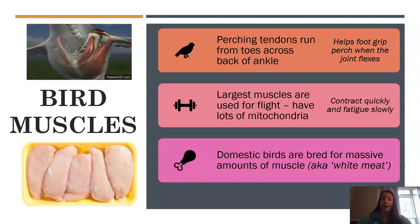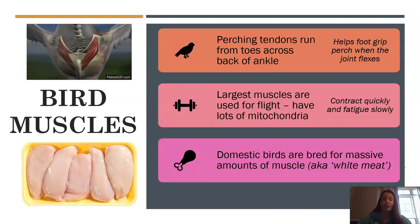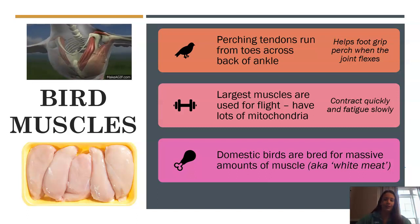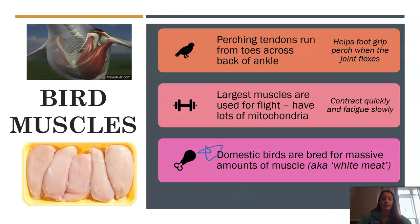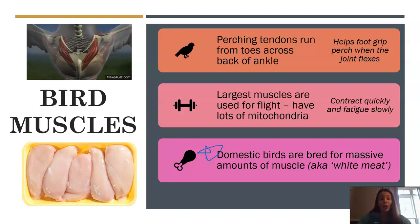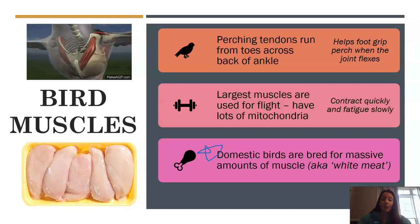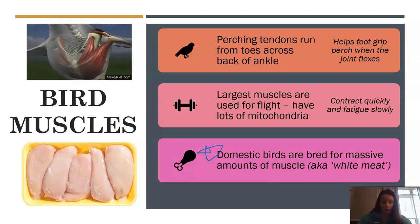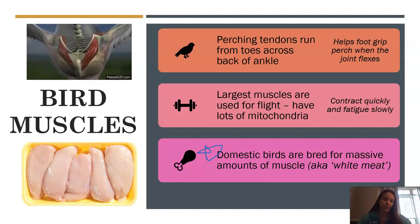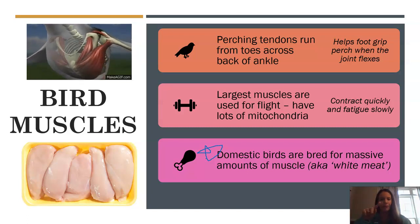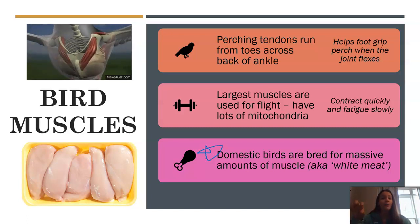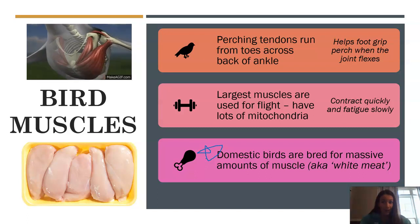Breast muscles are really important for flight. It's important to note that domestic birds are bred for their flight muscles — they can't fly now because their flight muscles are so large, but they were bred for this, and these are the largest muscles in a bird. Another structure to point out is the perching tendon, along the back ankle of the foot. It helps so when they come down and grip, that joint flexes and they're able to attach to tree branches.